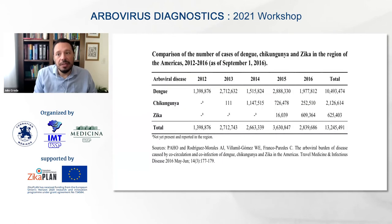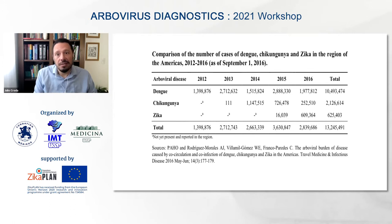Here is the burden of these diseases, especially in the Americas. When you look at the data, the majority of cases occur in Brazil. Looking at trends between 2012 and 2016, the cumulative dengue cases exceed 10 million, chikungunya more than 2 million cases, and Zika more than 500,000 cases.